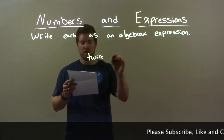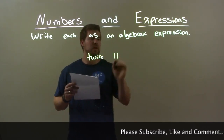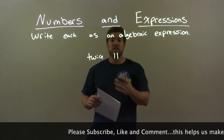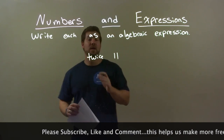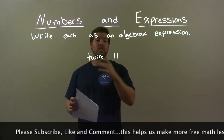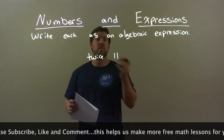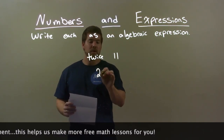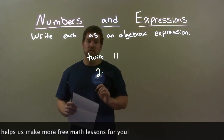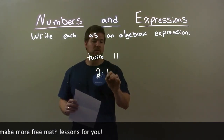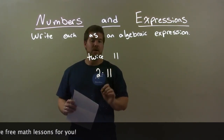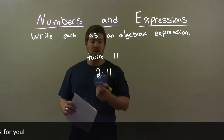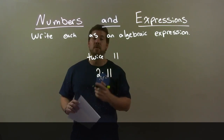2 times 11. So if we have twice 11, that's another way of saying it's 2 times 11 — twice as big. So to do that, we have 2 — multiplication — times the number 11. And that's it, we're done: 2 times 11.